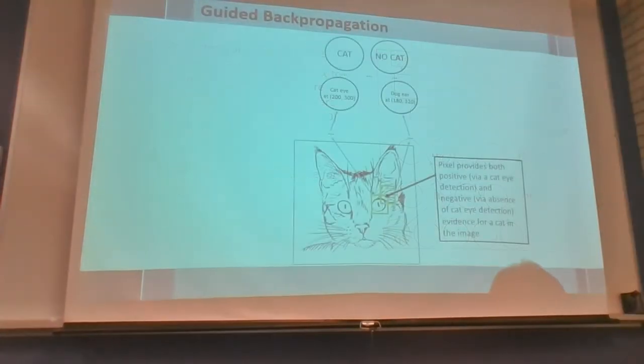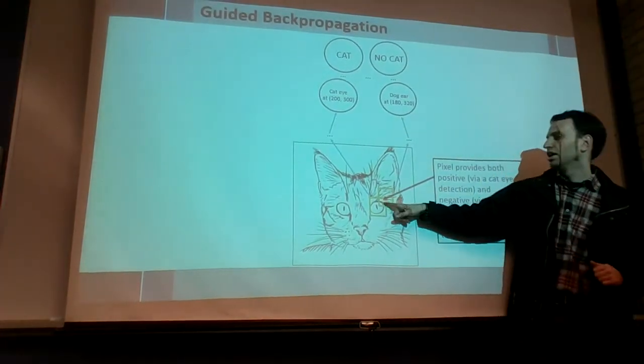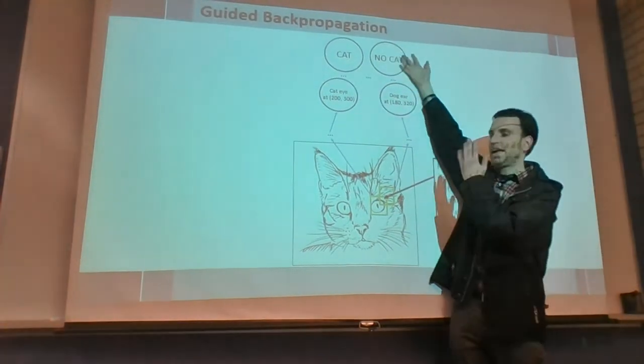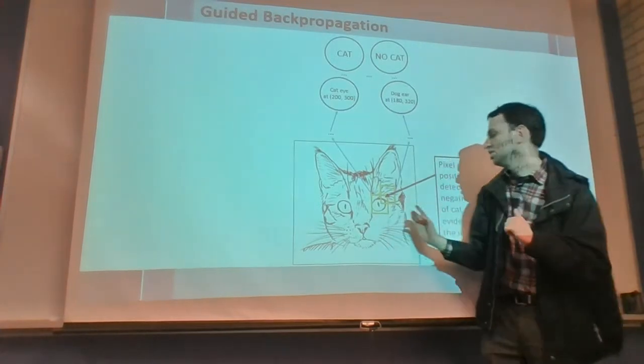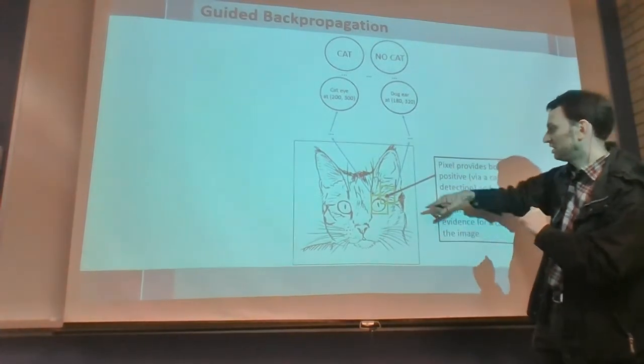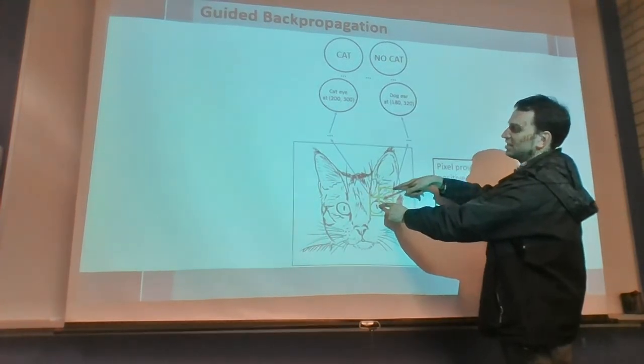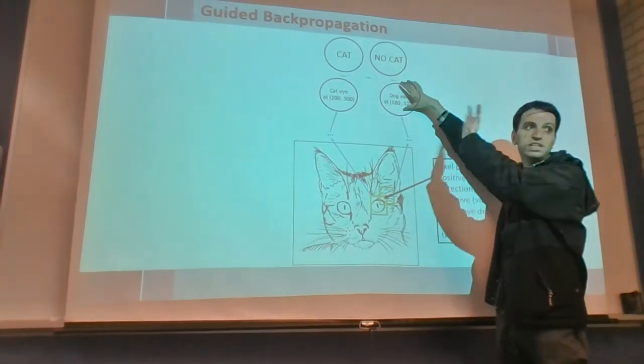So what do I mean by that? So consider this pixel on the cat, where you could have an output that's cat and an output that says no cat. For example, it might say dog or something. So how does it work? So here, this pixel is part of this patch, and let's say that this patch makes the dog here at those coordinates neuron be high.